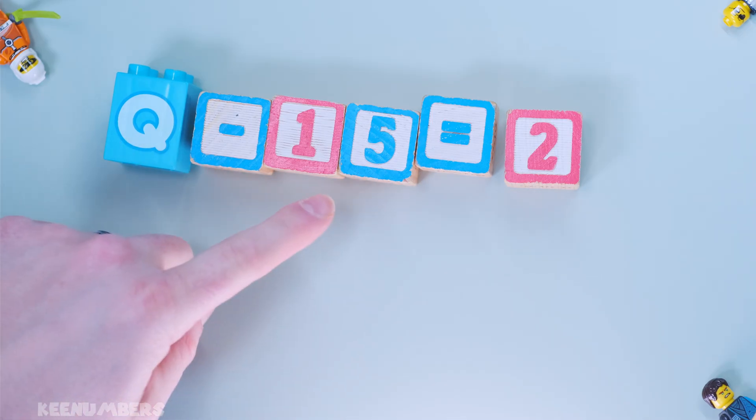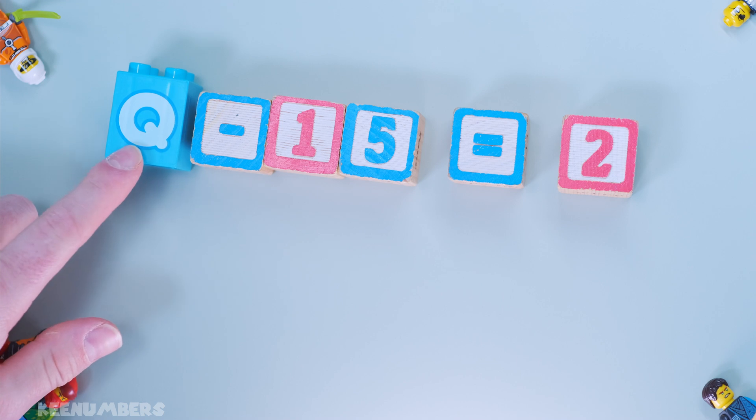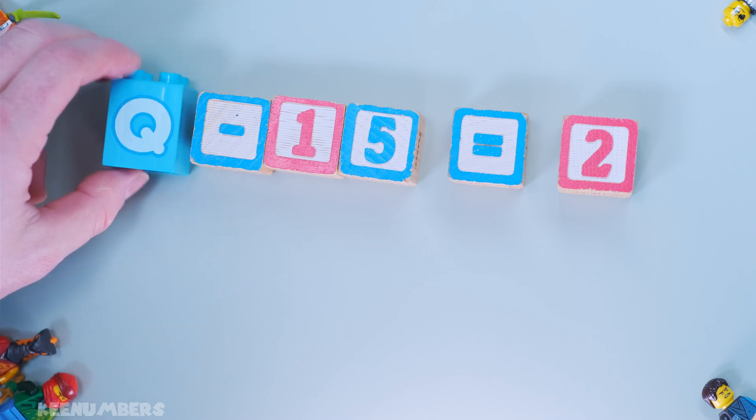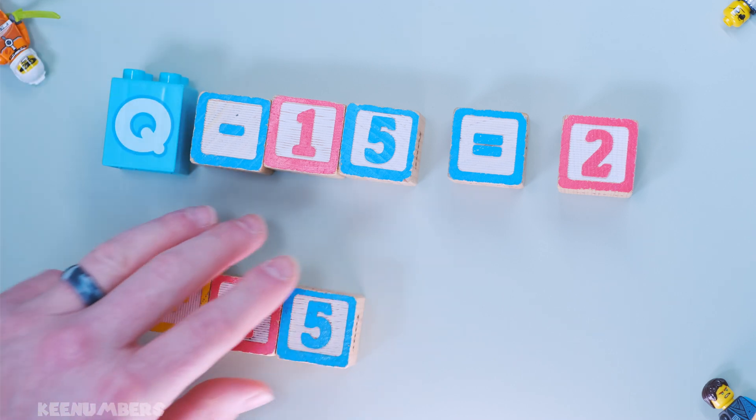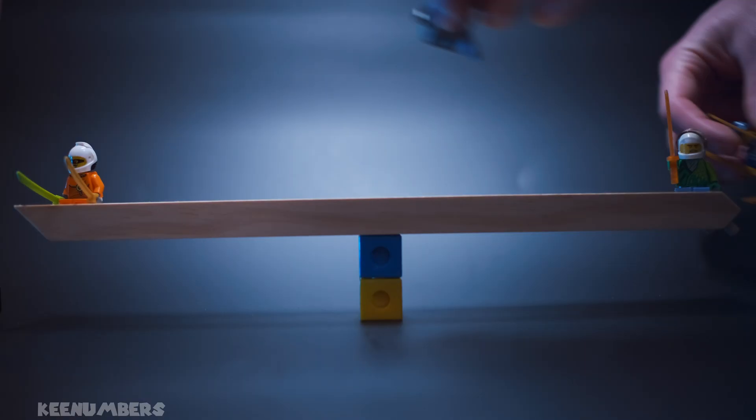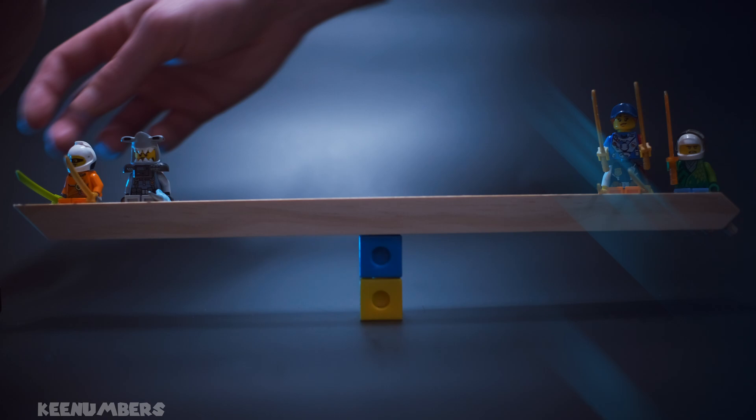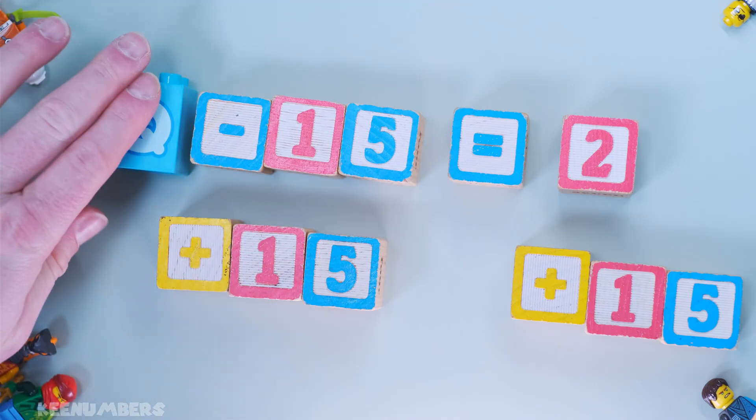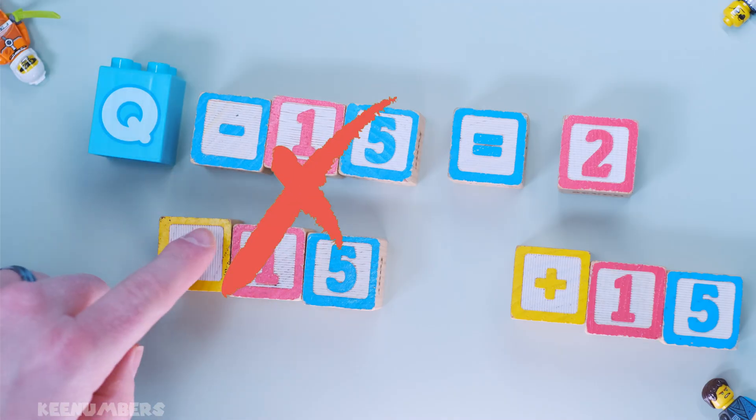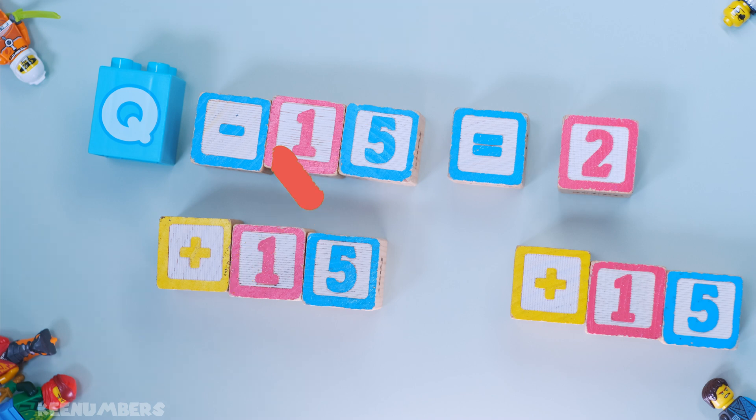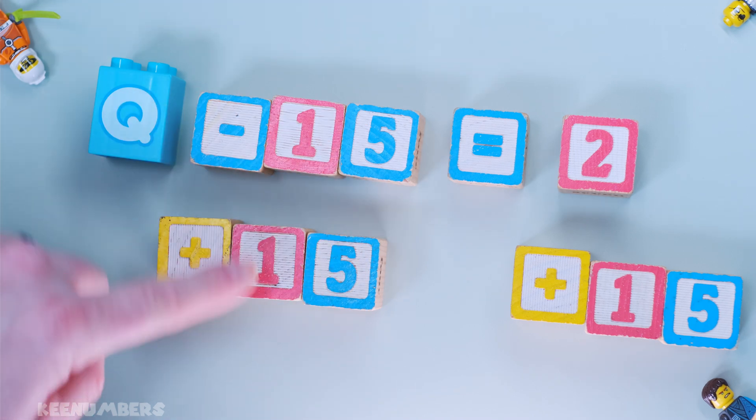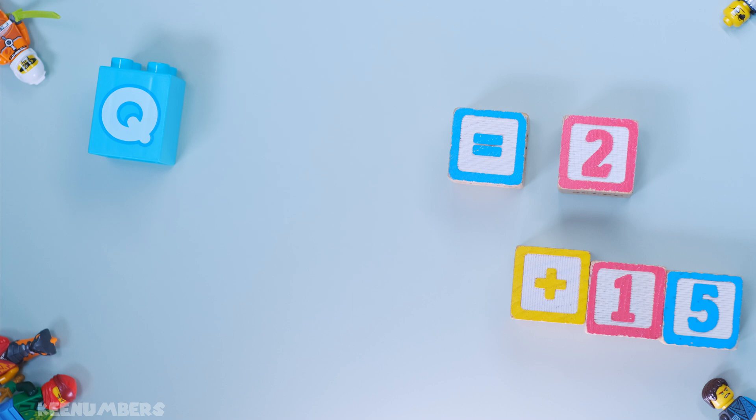Q minus 15 is two. So what are we gonna do? We gotta figure out what Q is. How do we get there? If we do this on the left side, we gotta do it on the right side. We're trying to get Q by itself. That's the goal. So if I add 15, I'll get a big ol' whopping zero on this side. 15 minus 15, yep, that's good old zero.